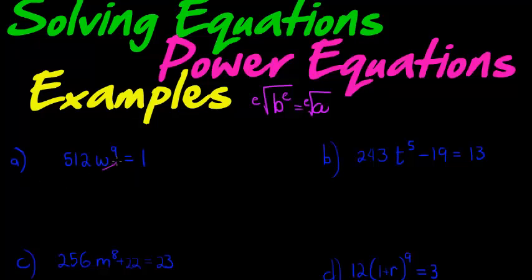Looking at this one, I can see my power is W to the power of 9. To get it on its own, I need to divide both sides by 512. If I do that, I get that W^9 is equal to 1/512.